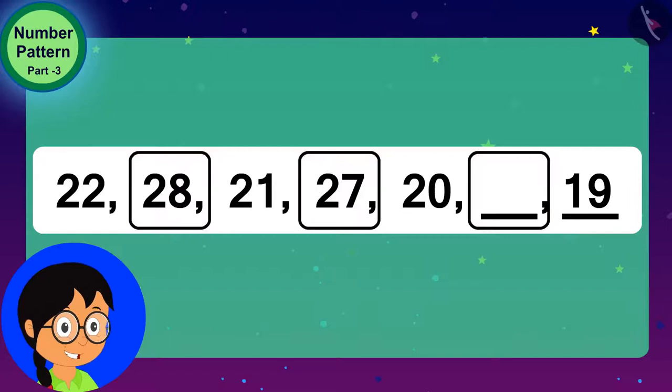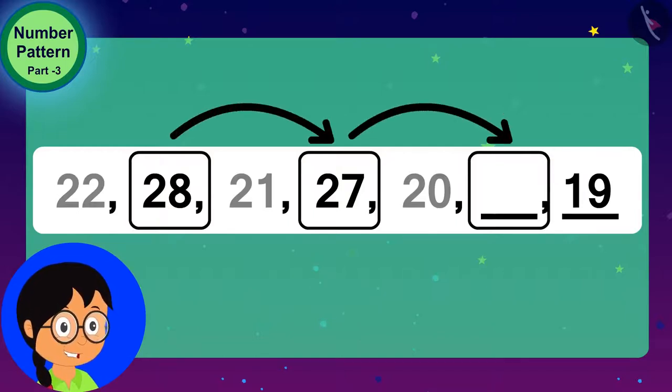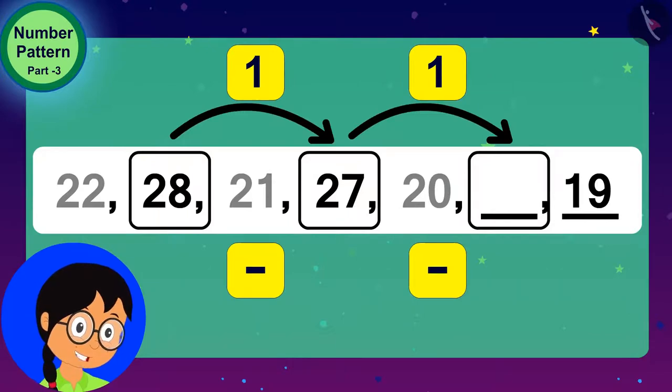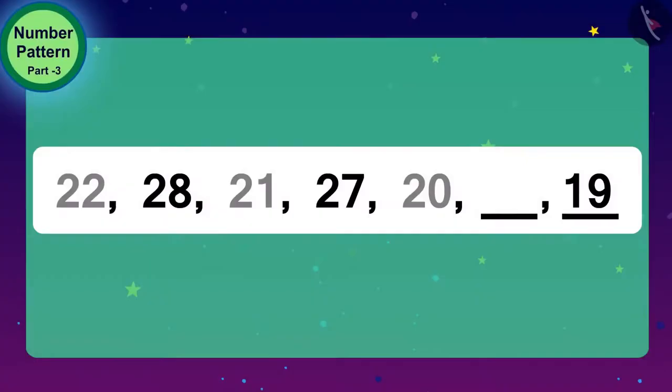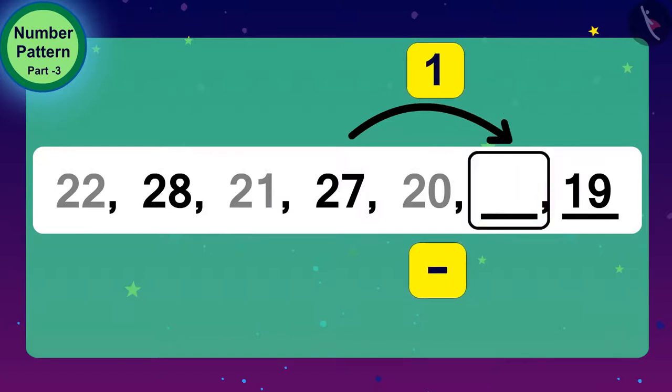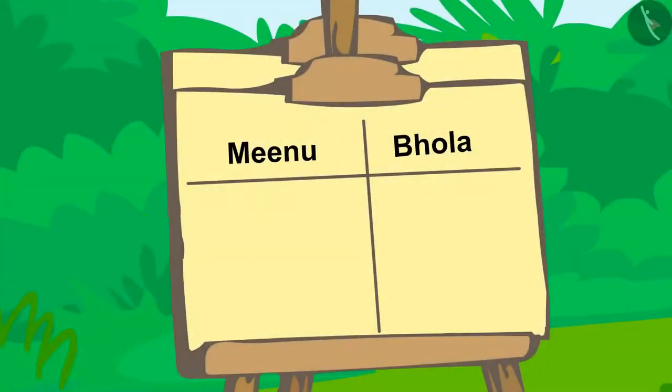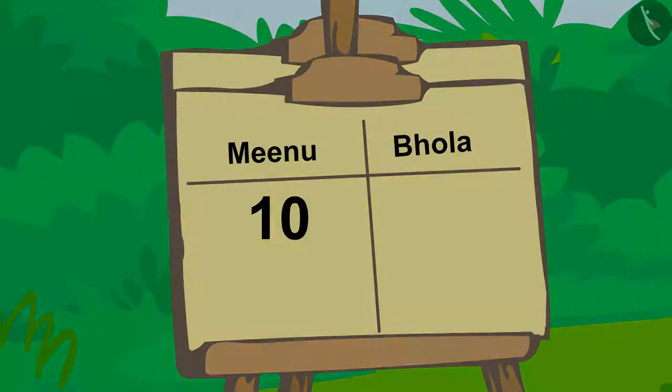Now, I looked at the numbers written at even number places and found that these numbers are also found to be subtracted by 1, like the numbers written at odd number places. Children, can you tell what number will be in the sixth place? Exactly! In sixth place is 26, 1 less than 27. In this way, Meenu won the round by winning 10 points.